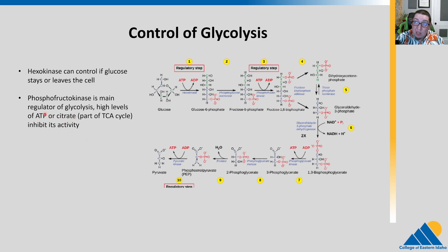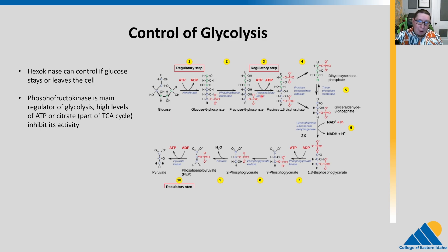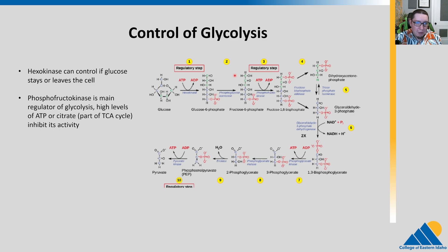Phosphofructokinase is actually the major regulator in glycolysis. If you have high levels of ATP, it actually inhibits this enzyme — it turns it down, saying we already have plenty of ATP, let's decrease your activity. Citrate, part of the TCA cycle, can also inhibit it. If you have lots of citrate in the TCA cycle, you've already got lots of stuff going in there, so we turn down the level of this enzyme because we're already producing lots of ATP. When ATP or citrate drops, the activity of phosphofructokinase goes back up.